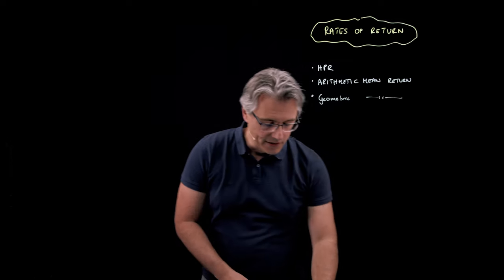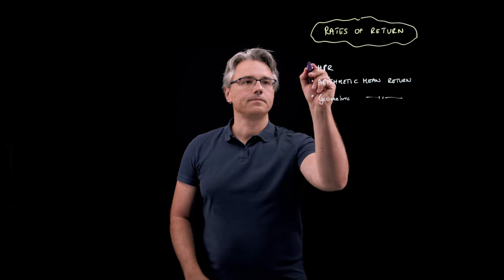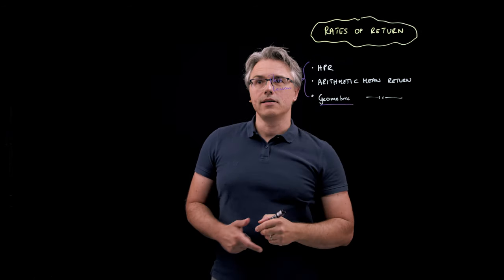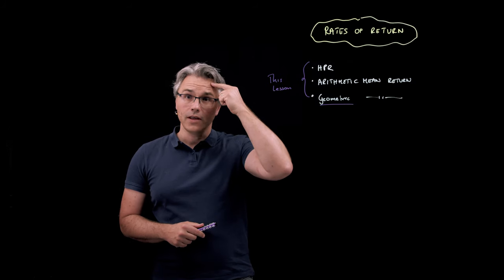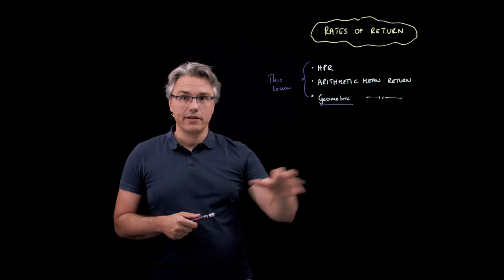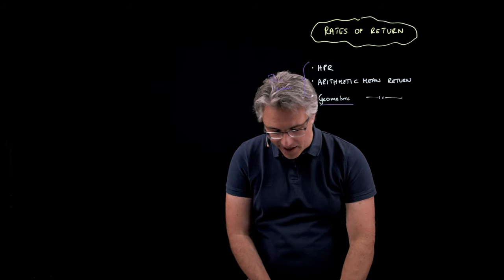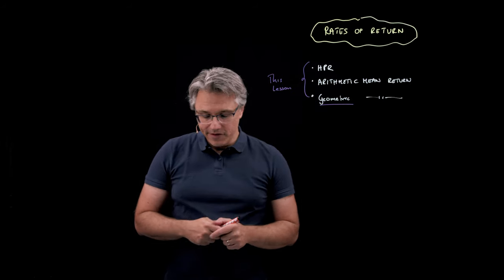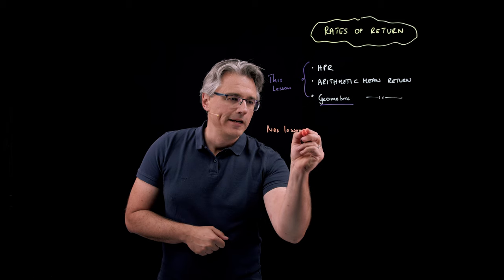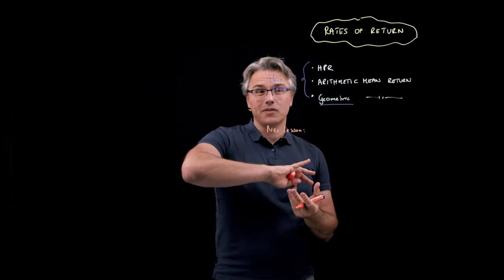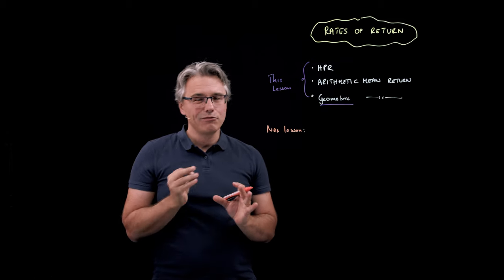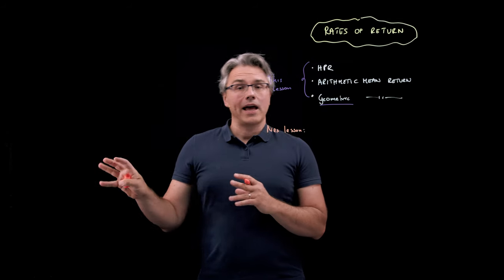These are going to be the topics for this lesson. The geometric mean is going to be quite important because it will appear under a different name later — it's called the time-weighted rate of return, which we'll cover in a later lesson. In the next lesson, we're going to talk about ways to compute a rate of return where we need to deal with extreme values, so-called outliers.